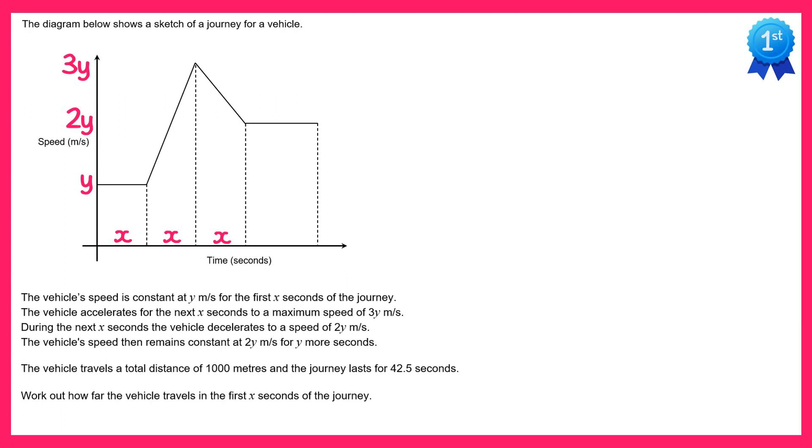And finally the vehicle speed remains constant at 2y for y more seconds. So a little bit different this time, it's this section here. We know the speed is at 2y already and it's constant, but it goes at this speed for y seconds, so this time the horizontal distance for this bar is y. Now we're told the vehicle travels a total distance of 1000 meters and that the journey lasts for 42.5 seconds.